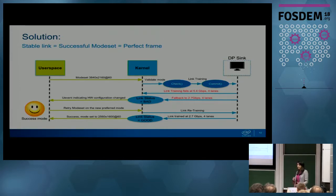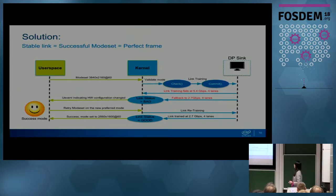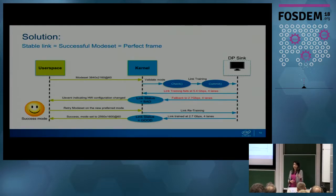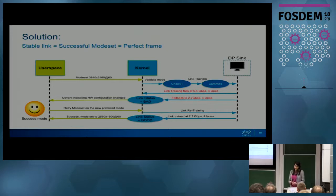This happens for all combinations - falling back through link rates all the way to RBR at 1.62 Gbps. If that doesn't succeed, it starts reducing the lane count all the way to one lane. It tries all combinations and keeps reducing resolution until it can show something on the screen - even a small resolution is better than a black screen.